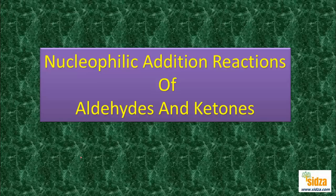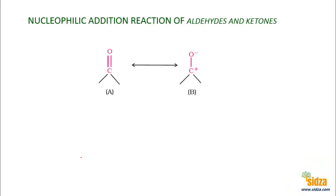Nucleophilic addition reactions of aldehydes and ketones. Aldehydes and ketones contain a carbonyl group, and the carbonyl group is polar. In the C=O bond, due to the electronegativity difference between carbon and oxygen, electrons are closer to the oxygen, so oxygen has a delta negative and carbon has a delta positive. Due to resonance, this electron pair can shift to the oxygen, giving two resonating structures.